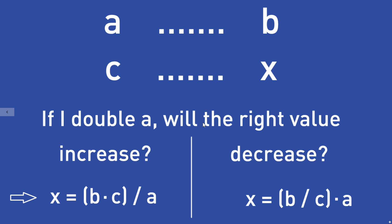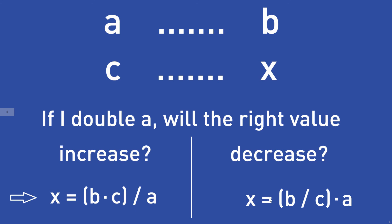If it increases, X is given by X = (B × C) / A — just insert for B, C, and A. If it decreases, X is given by X = (B / C) × A — again, just insert the values for B, C, and A.